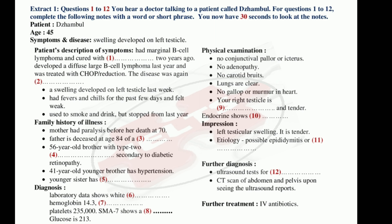As per the laboratory data, your white blood count is 13.8, haemoglobin 14.3, haematocrit 42.4, platelets 235,000. SMA-7 shows a potassium of 3.9. Glucose is 213. Physical examination shows no conjunctival pallor or icterus, no adenopathy, no carotid bruits, lungs are clear, no gallop or murmur in heart. Your right testicle is markedly erythematous, swollen and tender. Endocrine shows symptoms of type 2 diabetes mellitus. You have left testicular swelling, it is tender. Urology: possible epididymitis or possible torsion of the testes. You have a history of diffuse large cell lymphoma in remission, a history of marginal B-cell lymphoma, and status post-splenectomy two years ago.